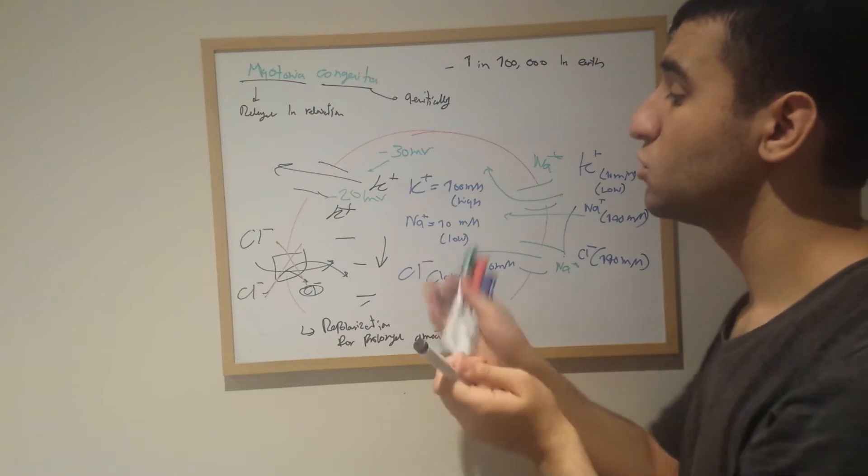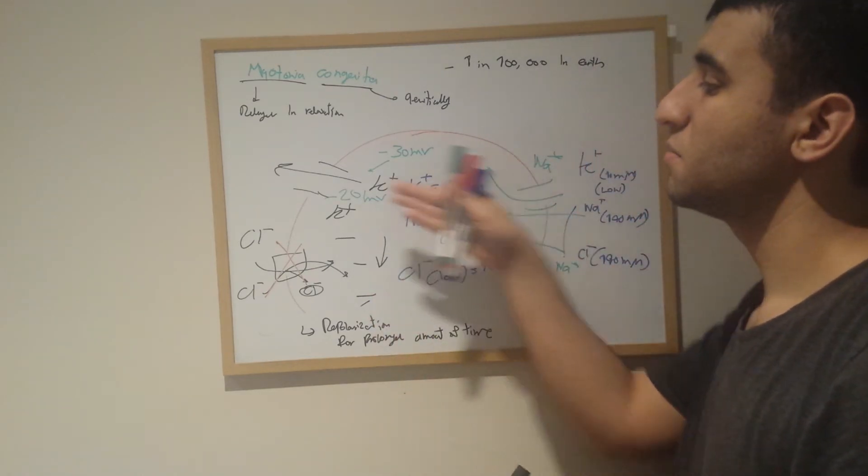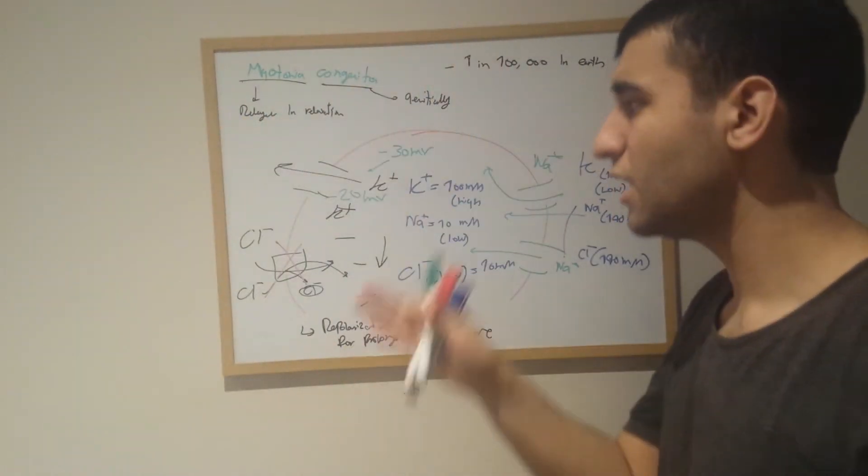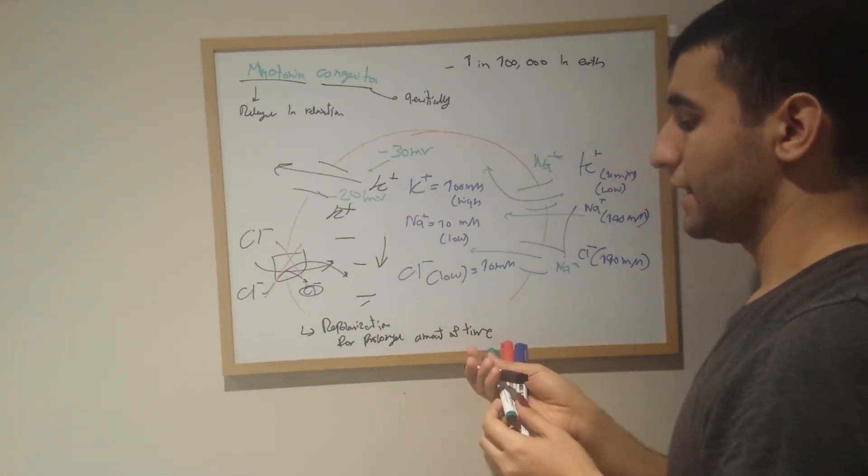It takes much more time to get the potassium to get out by itself and essentially bring down the whole membrane potential. The membrane potential as a result would become more positively charged for more time and it will become more contracted.